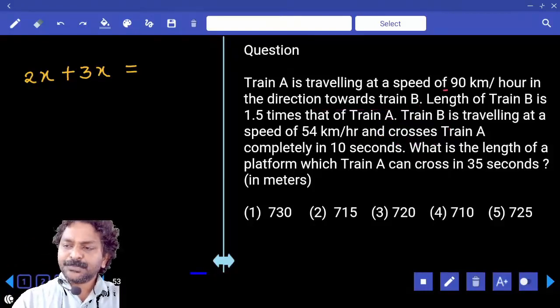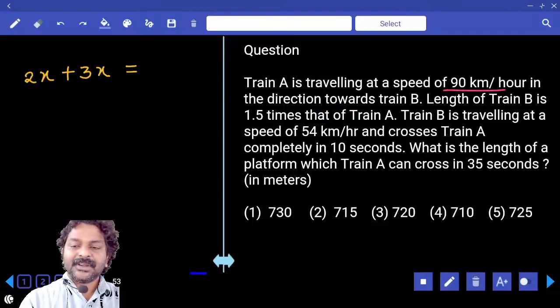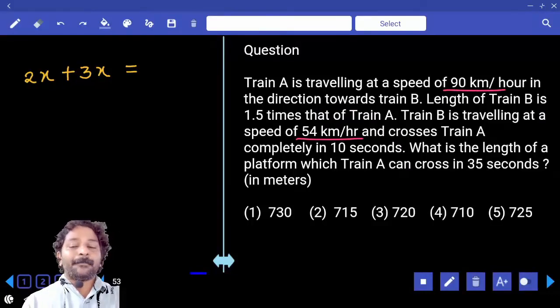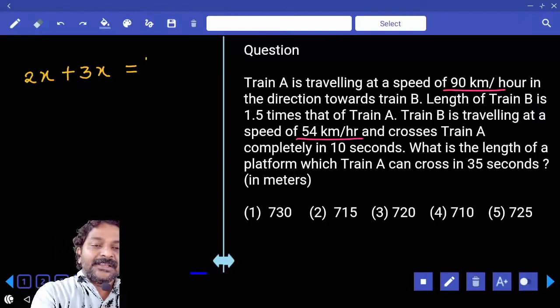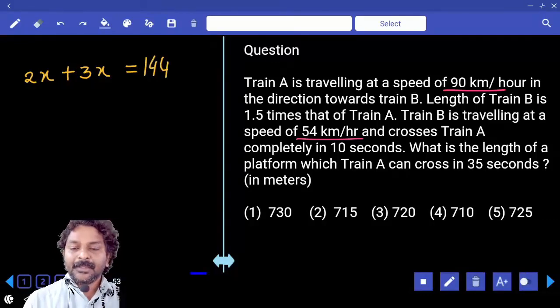Now, speed of train A, train B. When both are moving in opposite direction, relative speed is S1 plus S2, 144 km per hour.